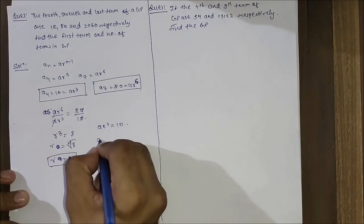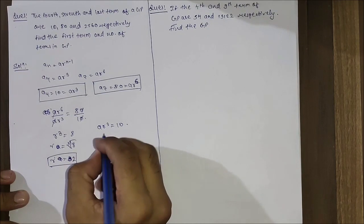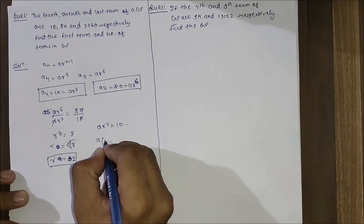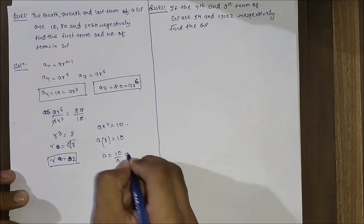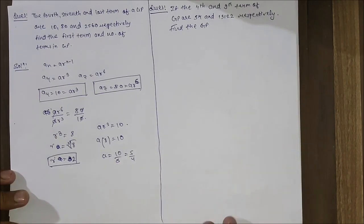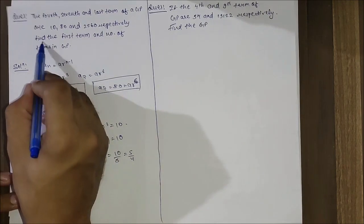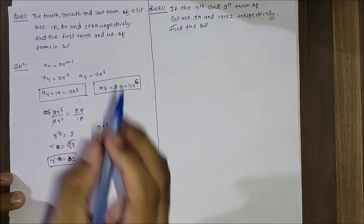Now putting r equals 2 in ar³ equals 10, we get a times 8 equals 10, so a equals 10 by 8, which is 5 by 4. We got a equals 5 by 4.